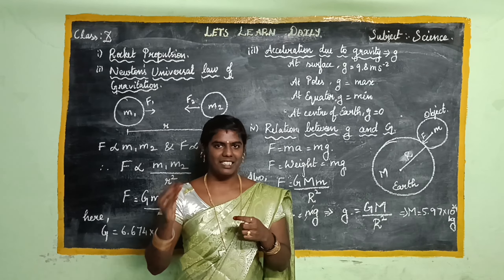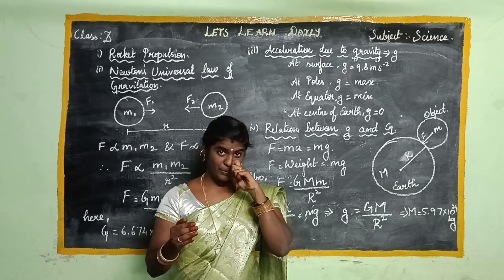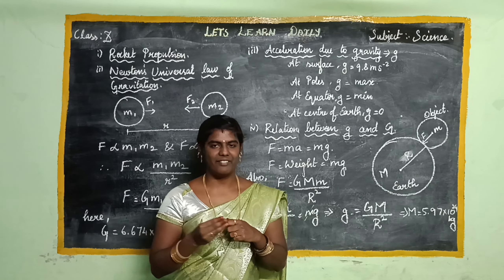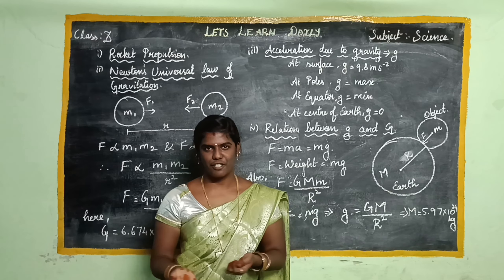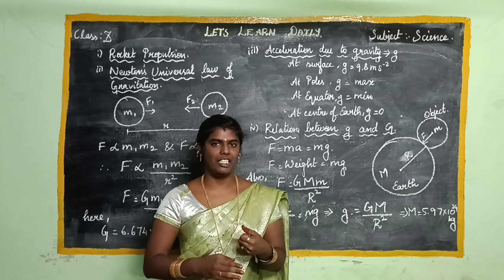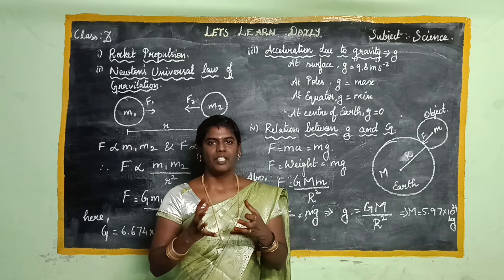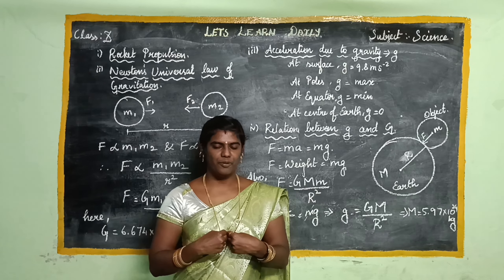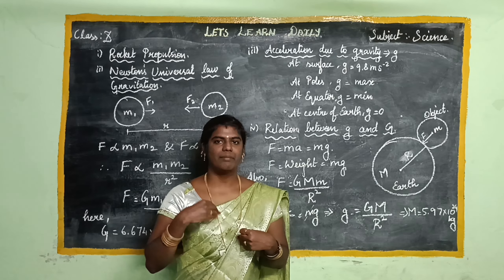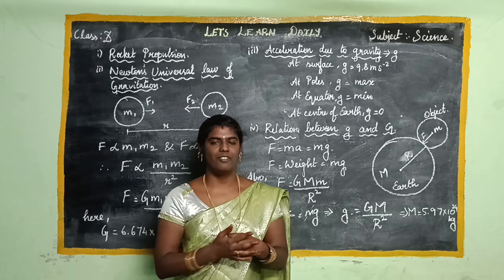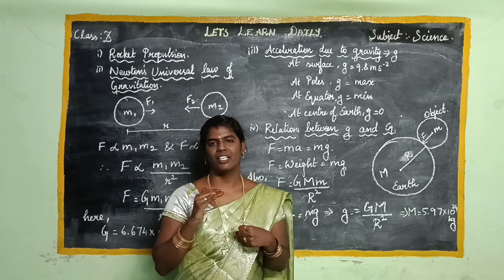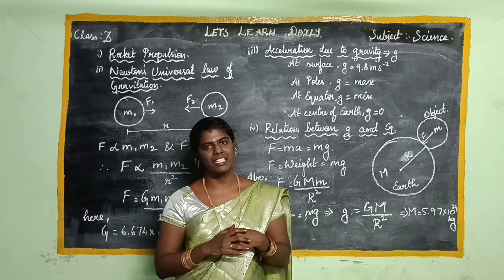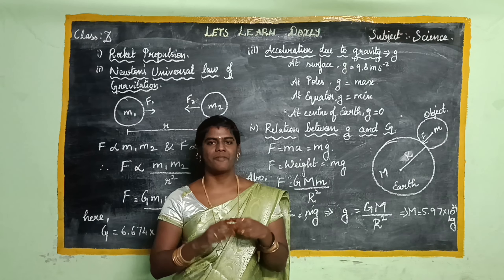When the rocket reaches a certain range, the rocket is full of velocity. That attractive force is overcome, and the velocity becomes the escape velocity.